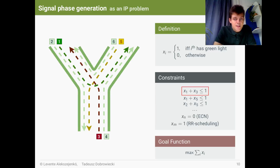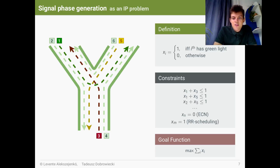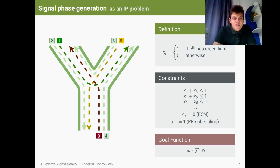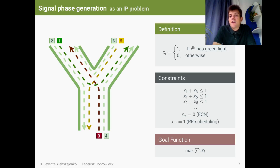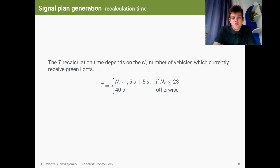This kind of condition ensures safety. The second type of constraints are to explicitly stop directions, for some xn equals to 0, which enforces the above mentioned ECN behavior. The third type of constraints are to explicitly give green lights for a direction, for some xn equals to 1. And in our solution, m is rotating through the directions, thus round-robin scheduling is created, which is theoretically fair.